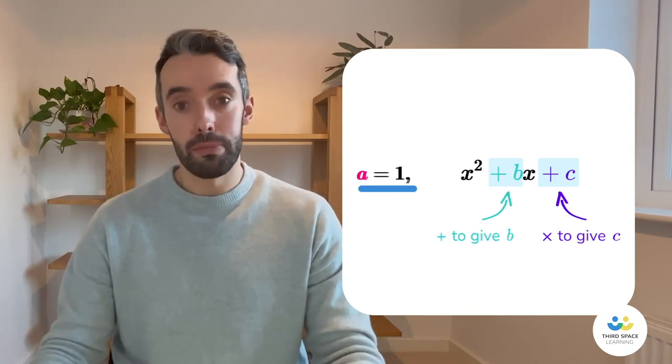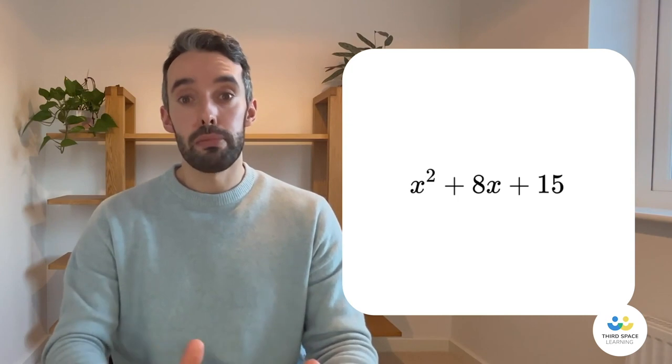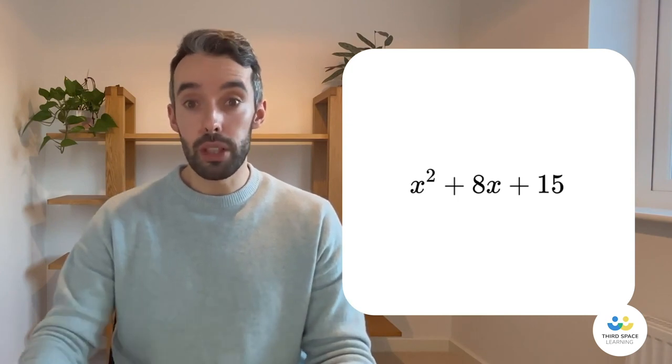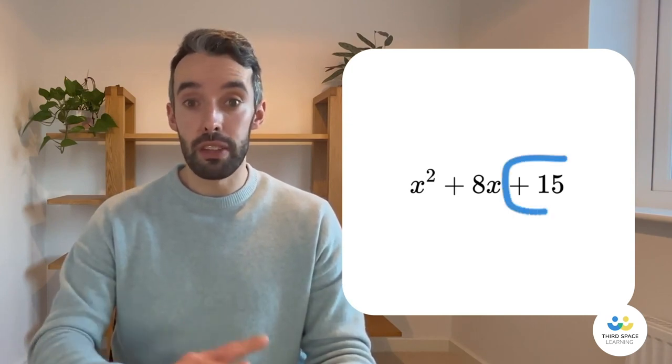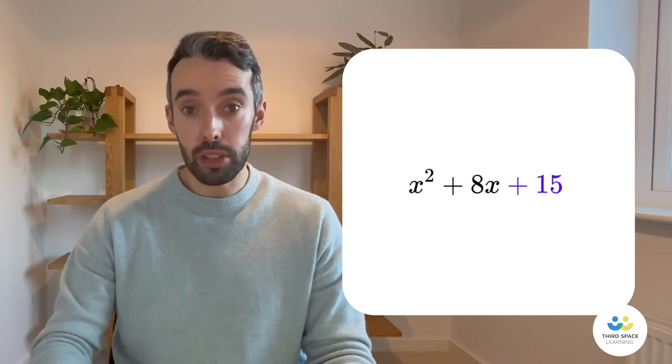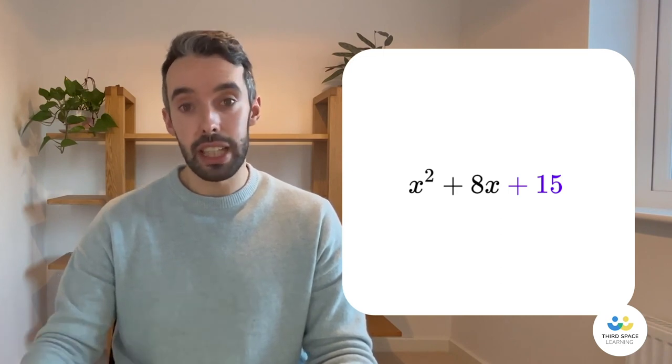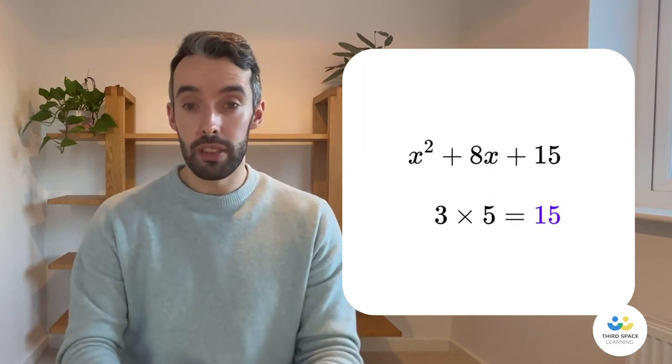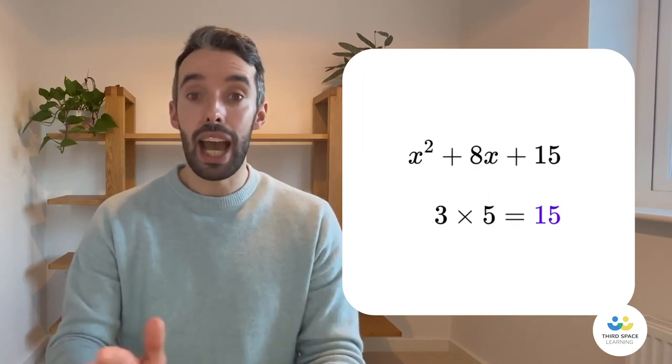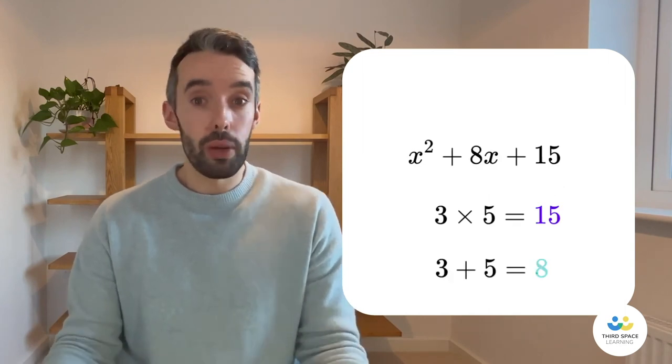For example, if we had x squared plus 8x plus 15, we need two numbers that multiply together to give 15, and the same two have to add to give 8. Well, 3 times 5 is 15, and 3 add 5 is 8. So we have our numbers.